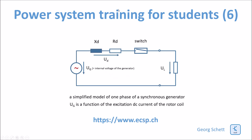Here we have a very strongly simplified model of the generator. It's one phase of the generator — we can do that because we assume the generator is symmetric, so there is a symmetric load. Here we have the voltage source, which is proportional to the internal voltage of the generator. The internal voltage of the generator is a function of the excitation DC current of the rotor coil.